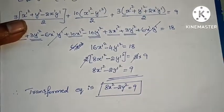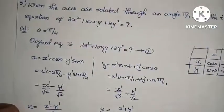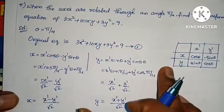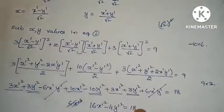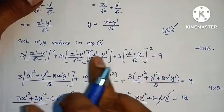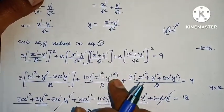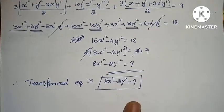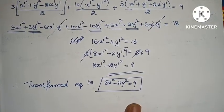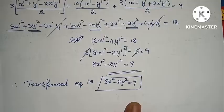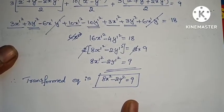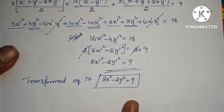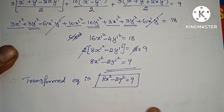Very simple again — same type of problem. Use the x and y rotation formulas, substitute into equation 1, apply (a minus b) whole square and (a plus b) whole square identities, multiply and simplify. The answer comes out cleanly. This completes the second chapter, Transformation of Axes. For any doubts, put them in the comment box. Like, share, and subscribe to the channel. Thank you.